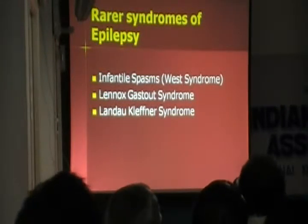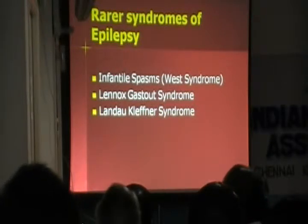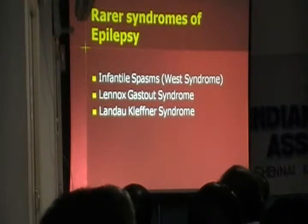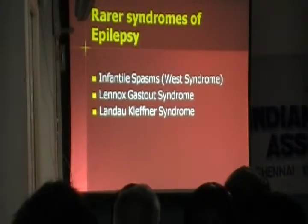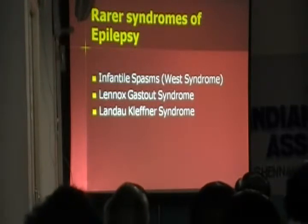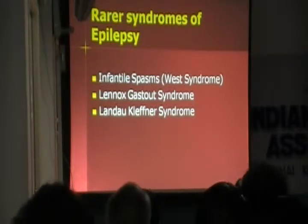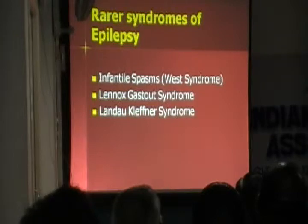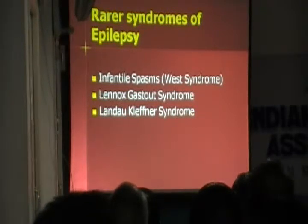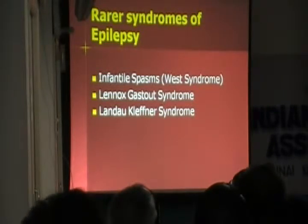These are some rarer forms of epilepsy especially in children. I'm sure all of us would have seen at least one case of West syndrome in our clinical practice. Infantile spasms is quite a serious diagnosis as far as the parents are concerned because it's got long-term problems in terms of development. Lennox-Gastaut syndrome is quite a difficult epilepsy syndrome to treat, and very often children with West syndrome grow up and start having Lennox-Gastaut type syndrome. There is also an acquired aphasia-type syndrome where a previously completely normal child suddenly develops epilepsy and loses speech, and this child usually never regains it back.